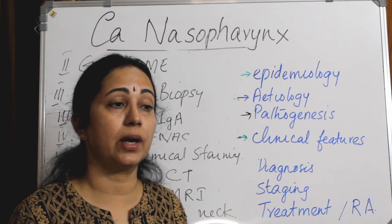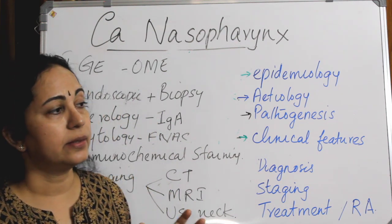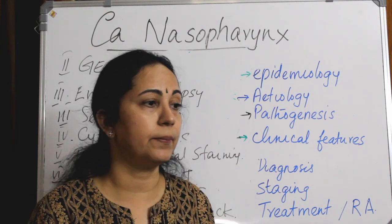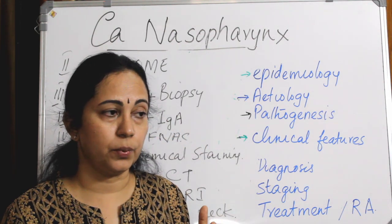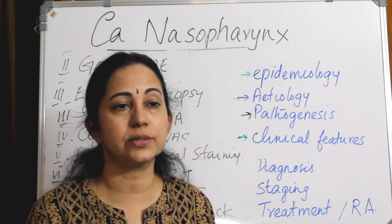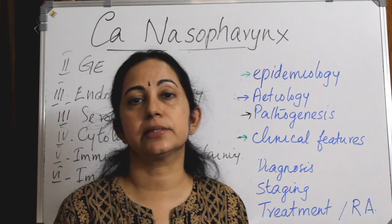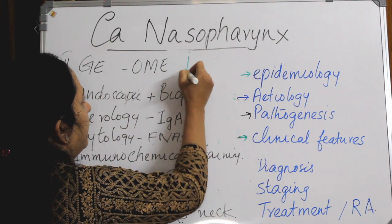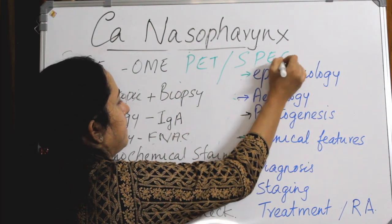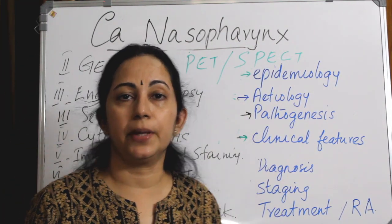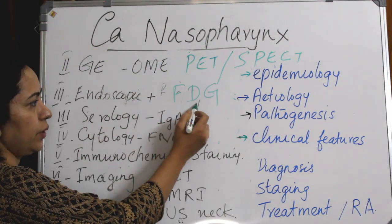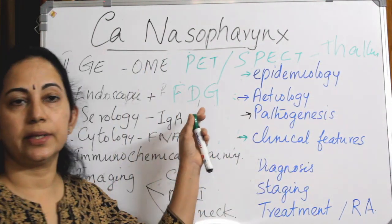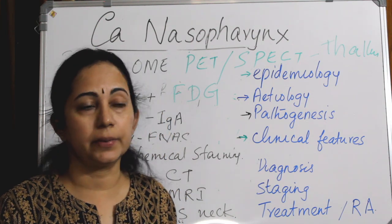A difficulty arises when differentiating post-radiotherapy edema from viable cancer tissue after treatment. Post-RT edema is in a hypometabolic state, while viable tumour, recurrence, or residual tumour is in a hypermetabolic state. In such cases, functional scanning with PET (positron emission tomography) or SPECT is needed. In PET, differential uptake of FDG (fluorodeoxyglucose) is assessed, while in SPECT it is the differential uptake of Thallium.